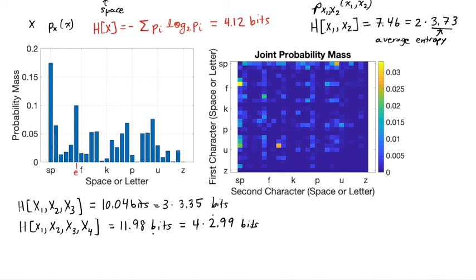So the per letter entropy is going down from 4.12 bits to 3.73 bits to 3.35 bits to 2.99 bits. It keeps going down as I include more and more letters. This also holds for words. If we consider the entropy in one word or two words or three words and four words, the entropy goes down as I include more and more words.